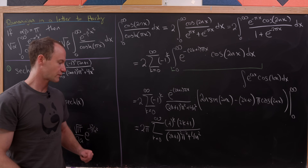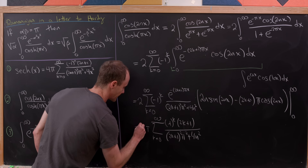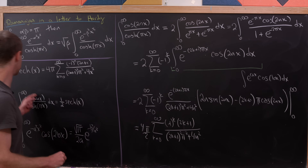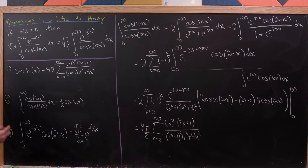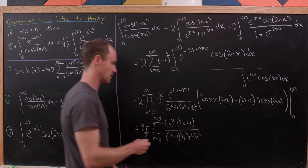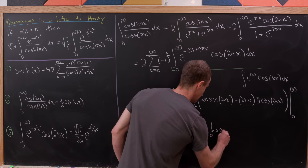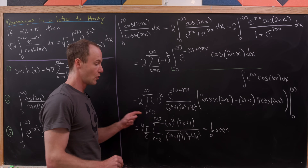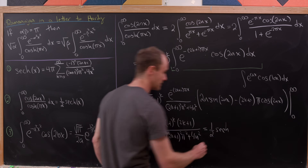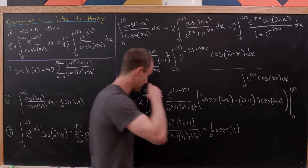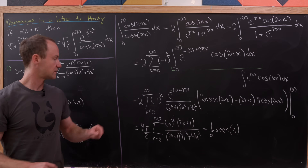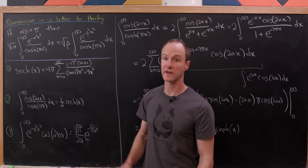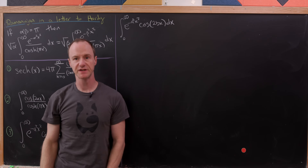We replace two pi with four pi over two, and then use the first tool — the hyperbolic secant series — to write this as one half times the hyperbolic secant of n. So we've now derived the second tool, and we're ready to look at the third tool.